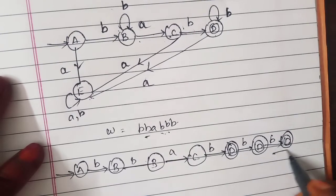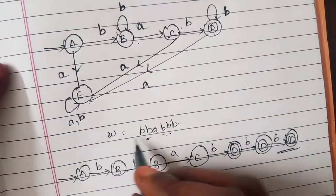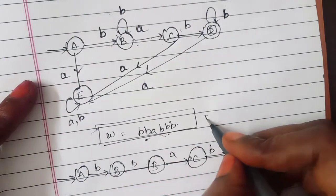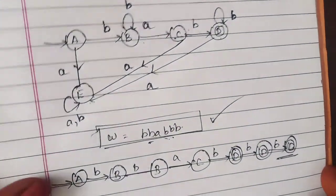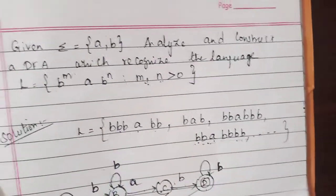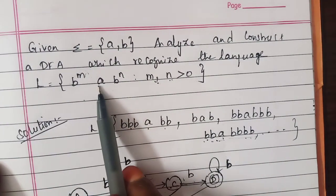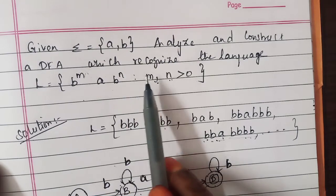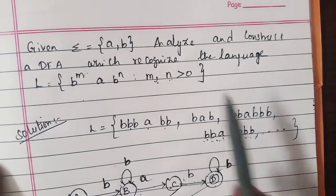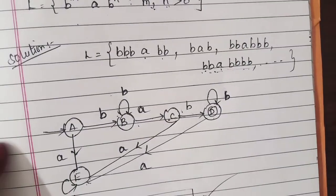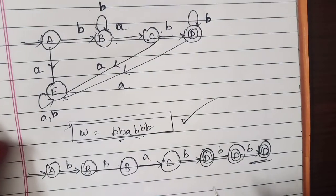So the string is accepted. This is the way you have to draw a diagram for L equal to b power m a b power n such that m comma n is greater than zero. Thank you for watching, we'll see in the next video.